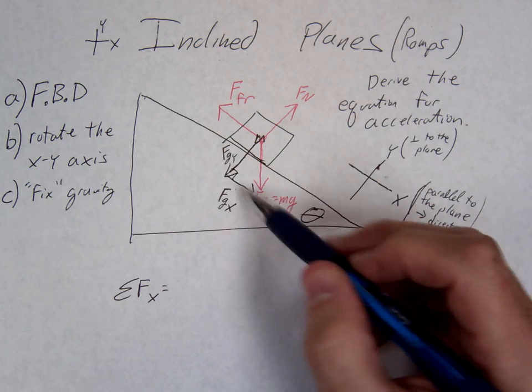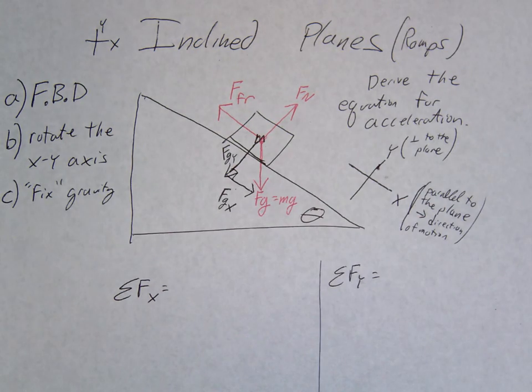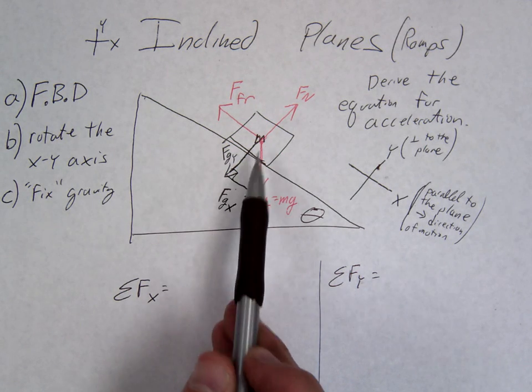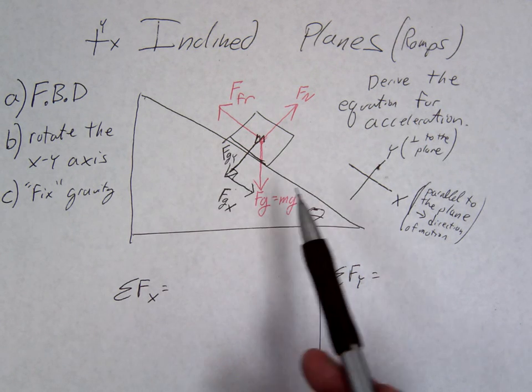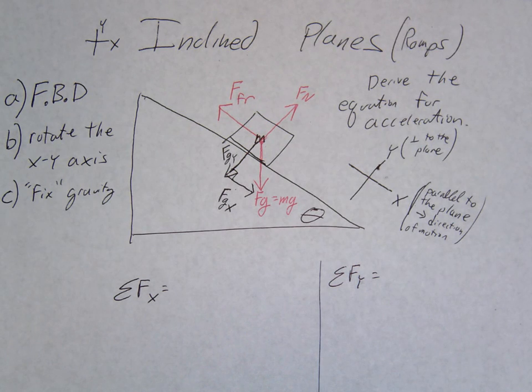So essentially what this is saying is gravity is doing two things. One of the things it's doing is our FGX. Well, let's go back to the visual up here. If I let this mass go, it starts sliding down the ramp. Right? Well, which component of gravity is responsible for sliding it down the ramp? FGX. So this is the component of gravity that's sliding the object down the ramp. What is FGY doing? Keeping it on the ramp. Keeping it on the ramp. Good. So FGY is pointed into the ramp. That's the part of gravity that's keeping it on the ramp. Right? Keeping it from sliding off.